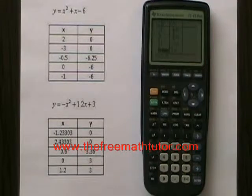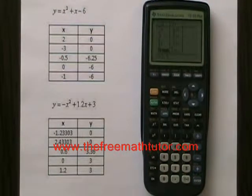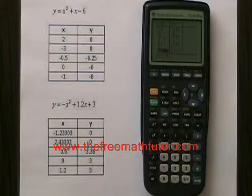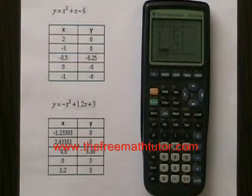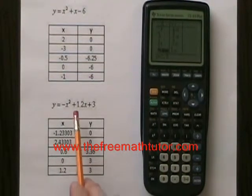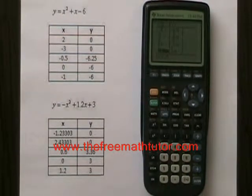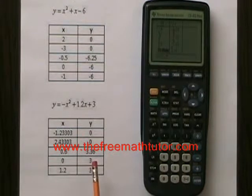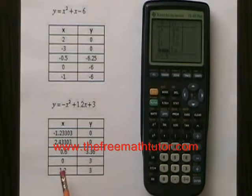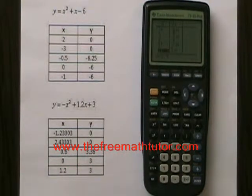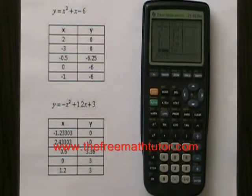But what if the x-coordinates of the key points are not multiples of 0.5 or commonly found numbers? Let's look at this second equation: y = -x² + 1.2x + 3. The only one of these points that I'm liable to find in my table of values in the calculator is the y-intercept, (0, 3). But I have ways of finding the other key points.